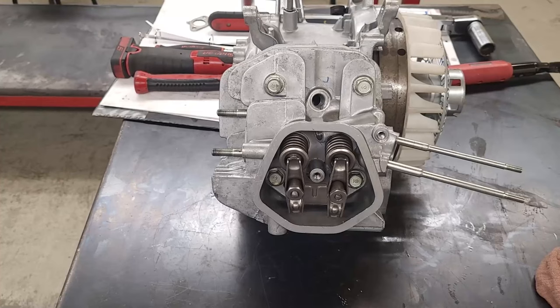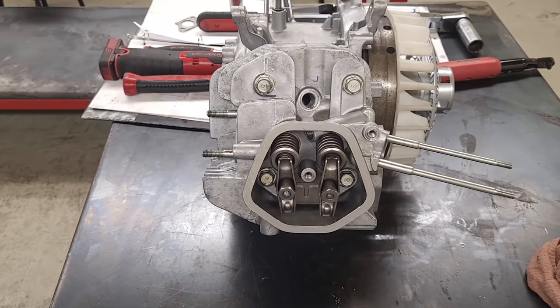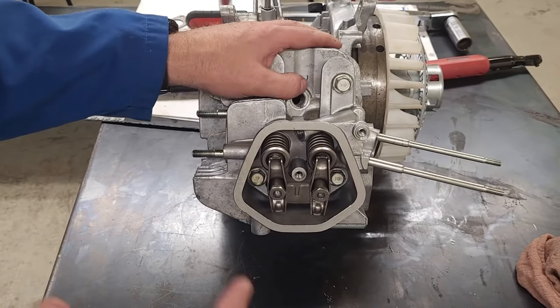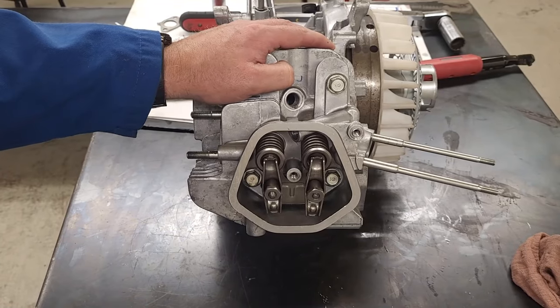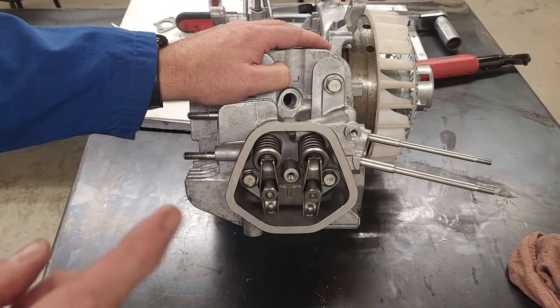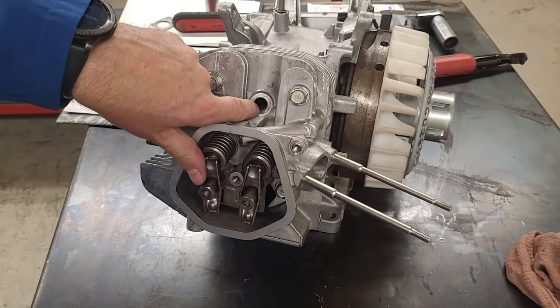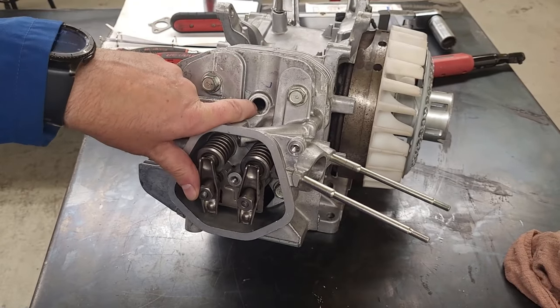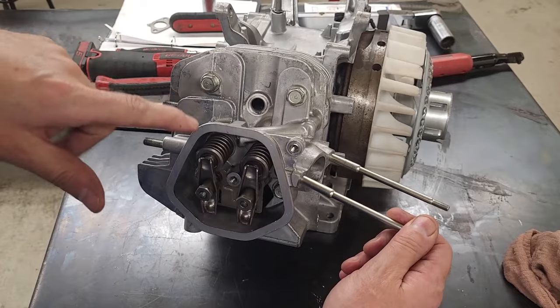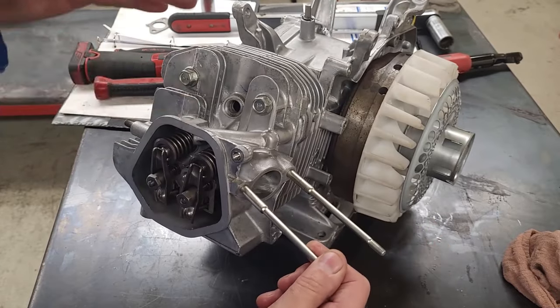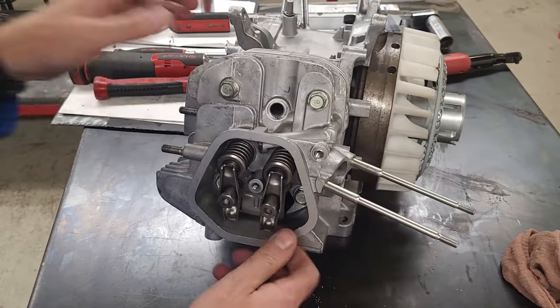For a valve adjustment, two things need to happen. I need to be on top dead center with my piston, and it also needs to be between the compression and power stroke. To do that, if I look down my cylinder through my spark plug hole, I can actually watch the piston move up and down, so I know when I'm up close to top dead center. How do I know if I am between top dead center compression and power?